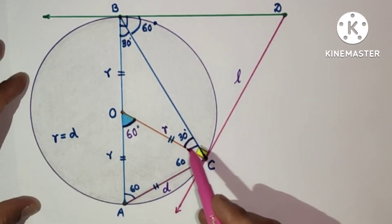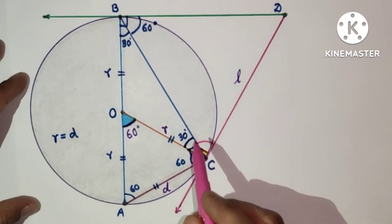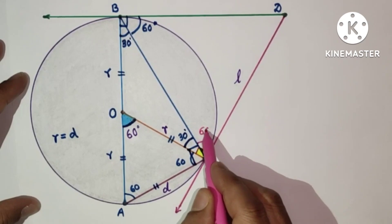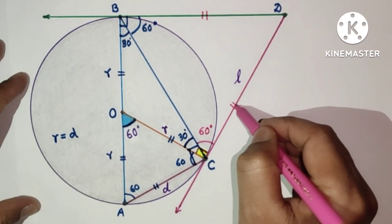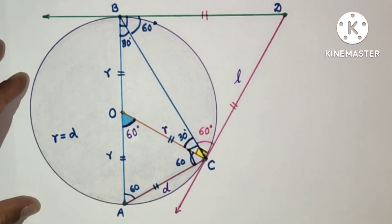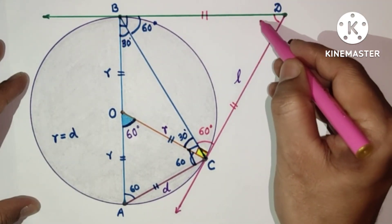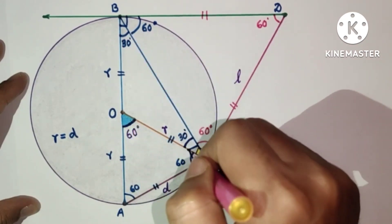This is 30 degrees. This angle is given as 90, so this remaining will be 60 degrees. So this is 60, this is 60, so these two will be equal. And we can say that 60, 60, and this will also be 60 degrees.